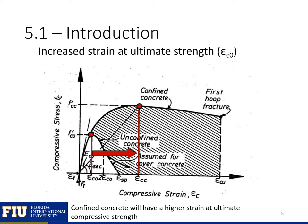Next, we can see that the confined concrete is going to have a higher ultimate strain at its ultimate compressive strength. I highlight the strain at ultimate strength for our unconfined and our confined concrete here, and you can see that our strain at ultimate for our confined concrete is substantially higher than our strain at ultimate for the unconfined concrete. Generally, we'll call the stress at ultimate f-prime-cc, the second c being for confinement, and our strain at ultimate will be epsilon-cc.